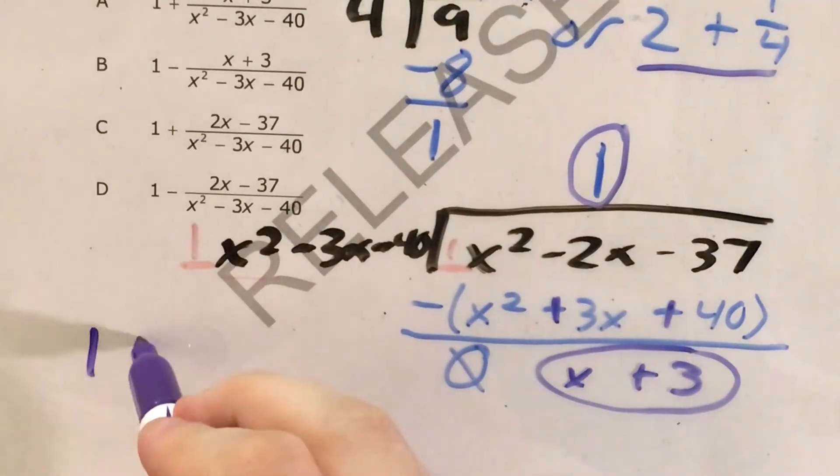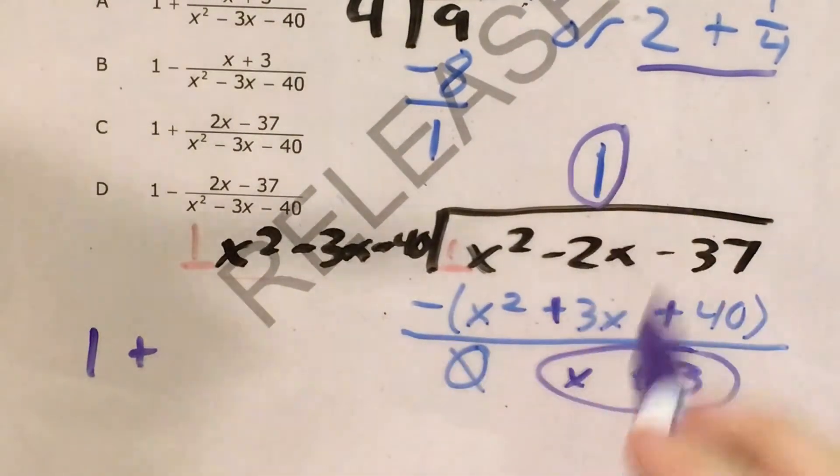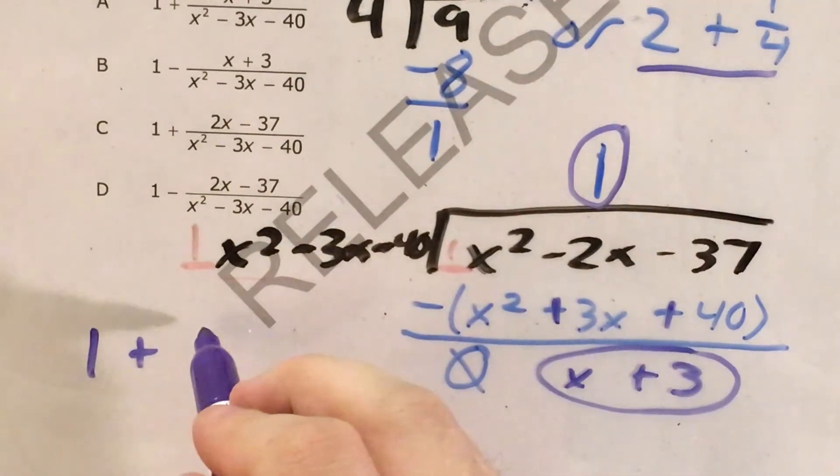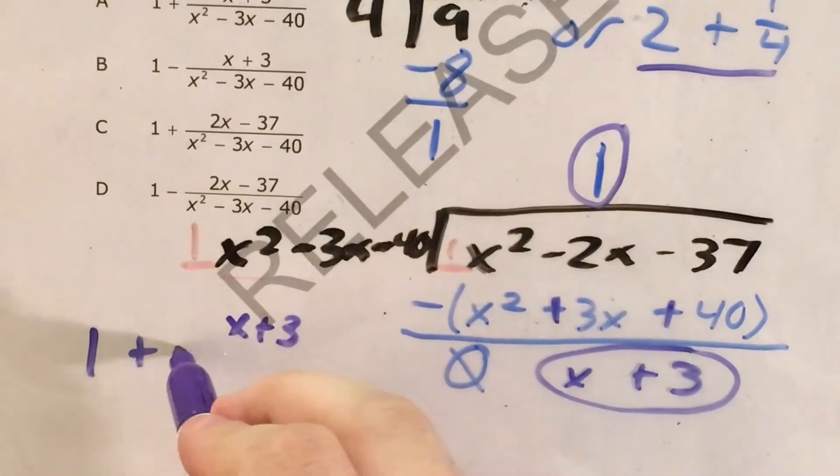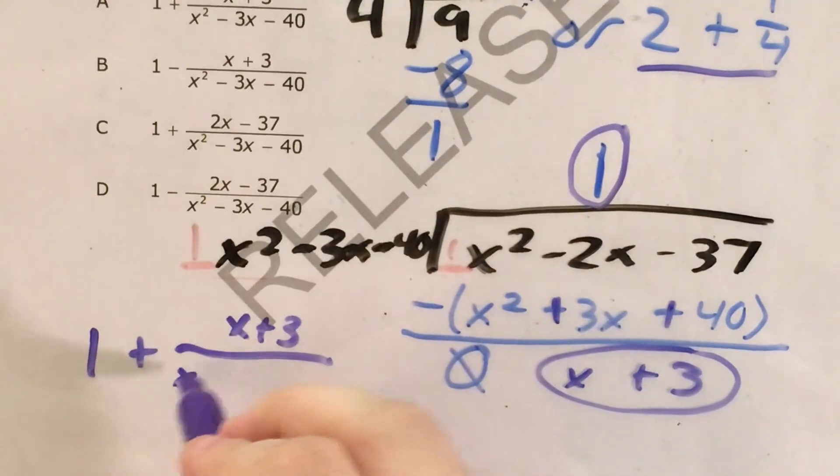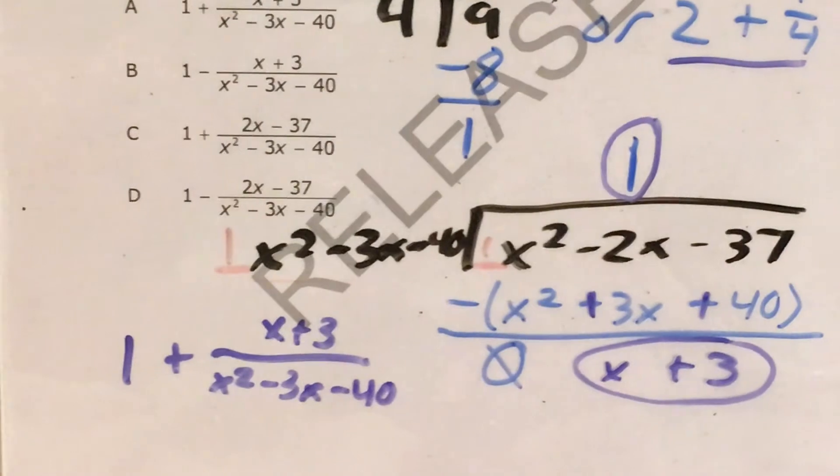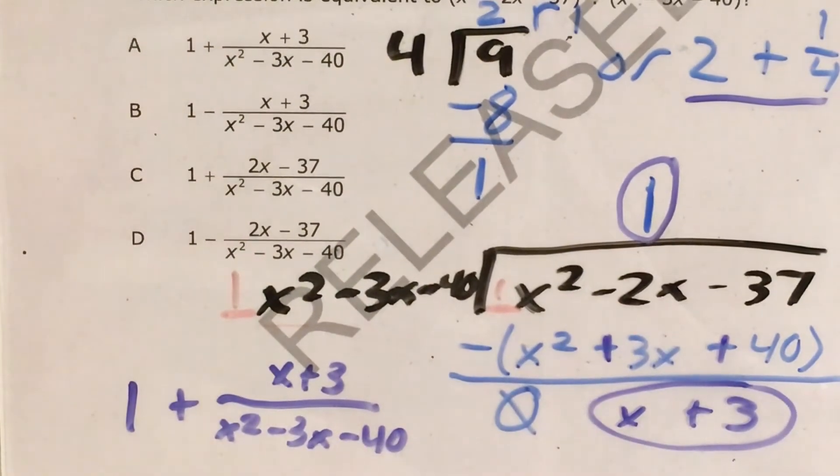So now I need to actually write this in the same language that I wrote two plus one fourth. So that's one plus, and remember my remainder goes over what I had originally divided by. So this is x plus three all divided by x squared minus three x minus 40.